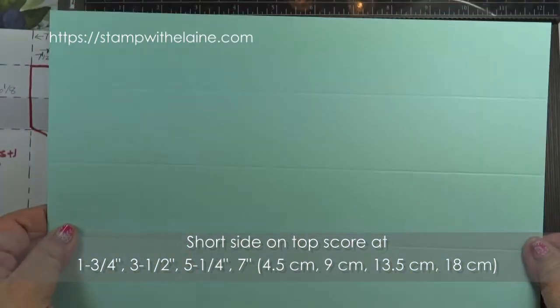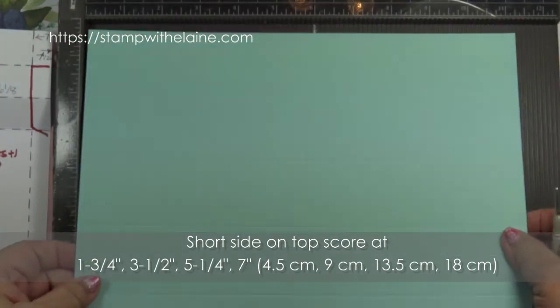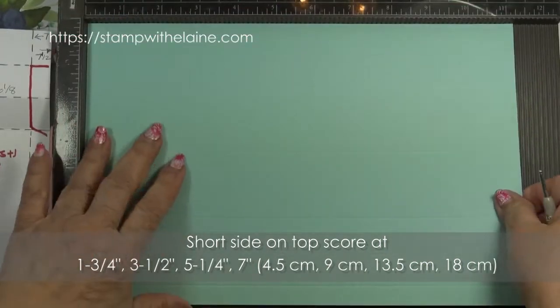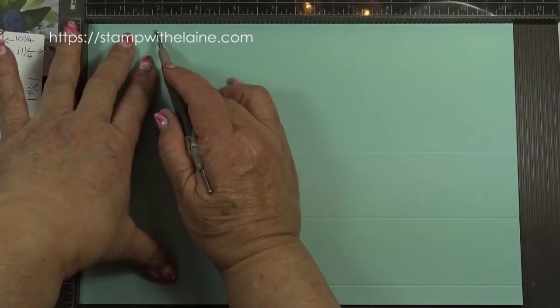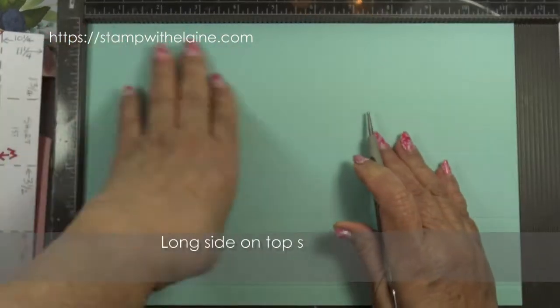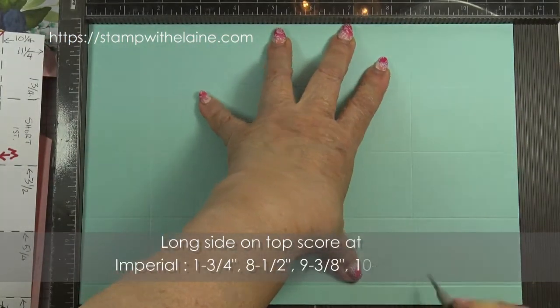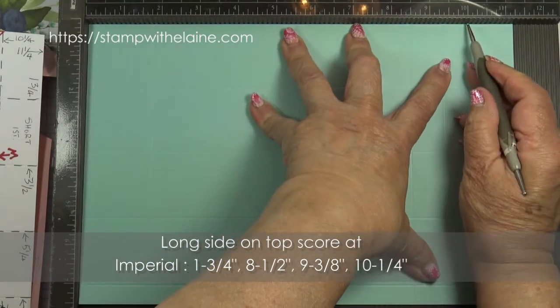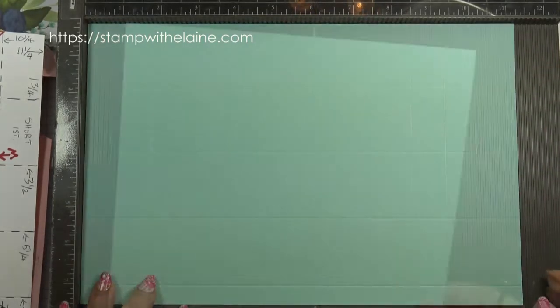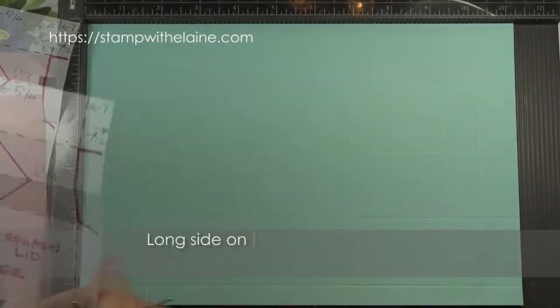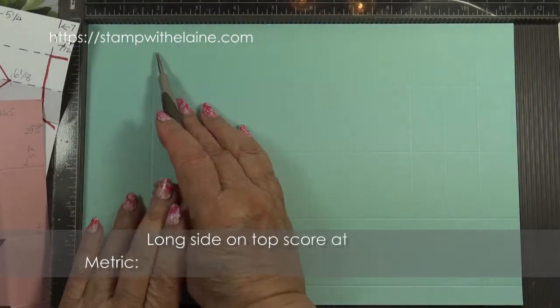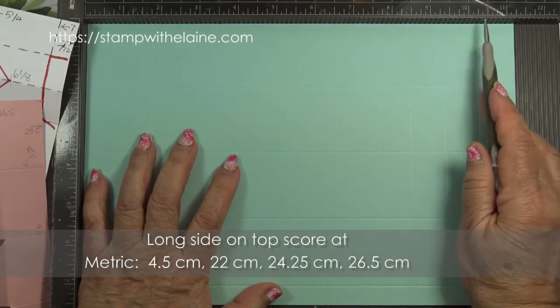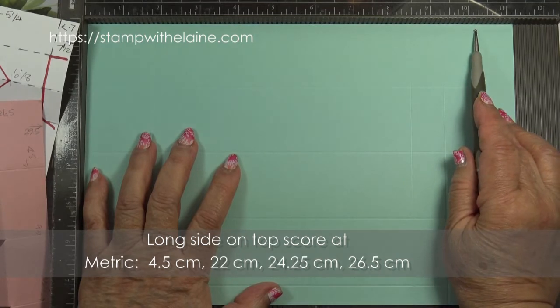Rotate your cardstock clockwise a quarter turn so that the half inch score line is at the bottom and the long edge is at the top. Score at one and three quarter inches, eight and a half inches, nine and three eighth inches, ten and a quarter inches. In metric that will be 4.5 centimeters, 22 centimeters, 24.25 centimeters, and 26.5 centimeters.